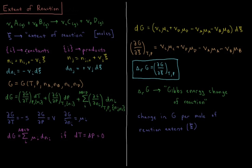We define our reactants as the set of species i, and our products as the set of species j. The number of moles of a given reactant, like A or B, is the initial number of moles minus their stoichiometric coefficient times the extent of the reaction — they get consumed based on their coefficient and how far the reaction has proceeded. For the products, the number of moles equals the initial moles plus the stoichiometric coefficient times the extent of the reaction.